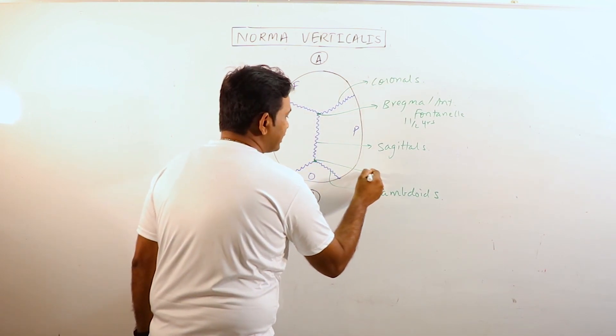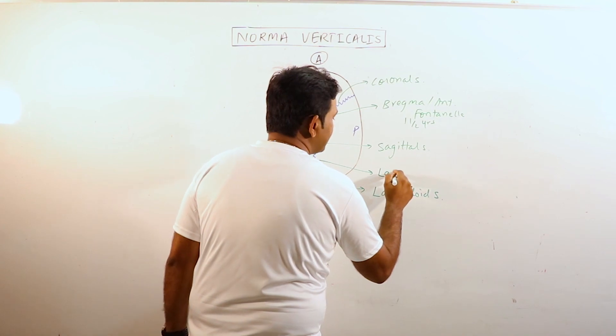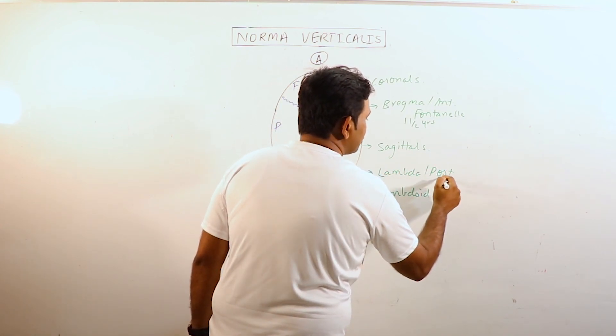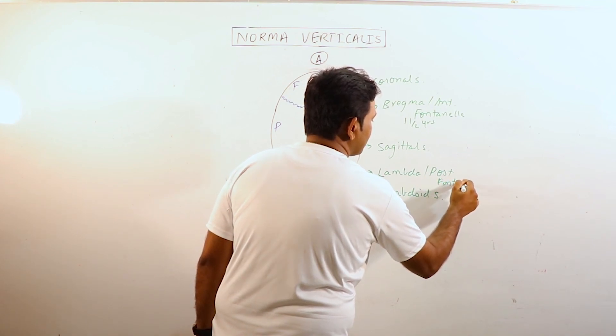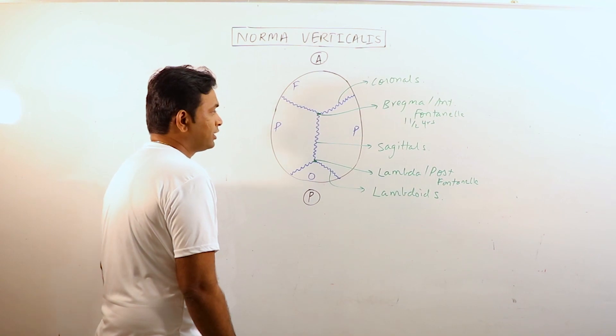Another membranous gap is observed at the time of birth at parietal occipital junction and this one is known as lambda, also known as posterior fontanelle. It gets closed by 2 to 3 months of age.